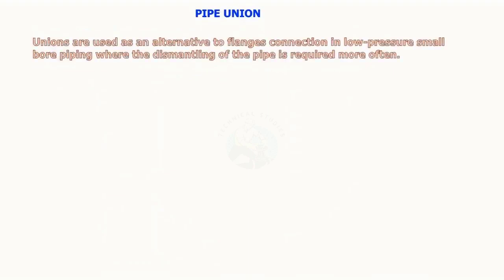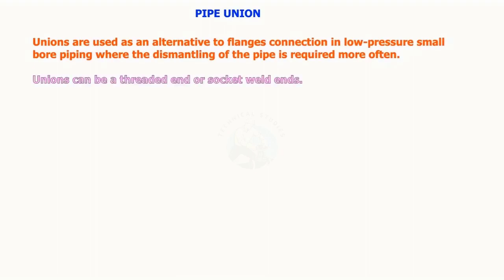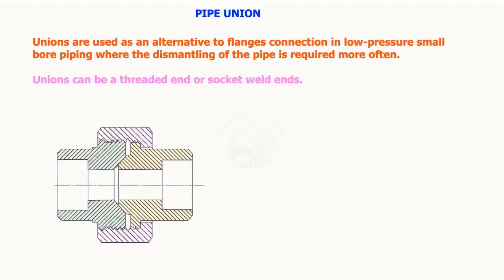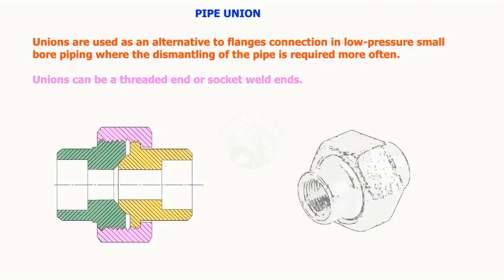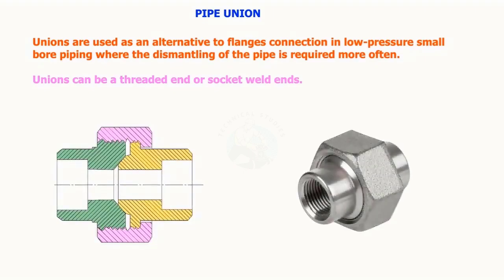Pipe unions are used as an alternative to flange connections in low-pressure, small-bore piping where the dismantling of the pipe is required more often. Pipe unions can have a threaded end or socket weld end.